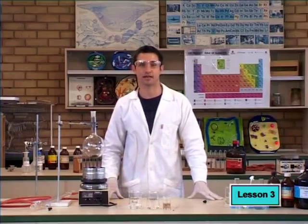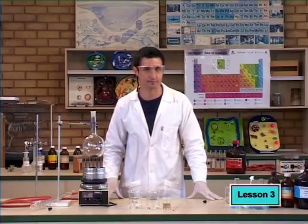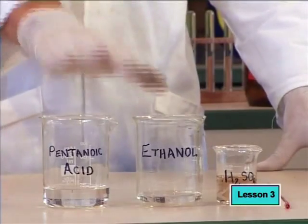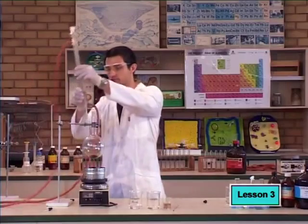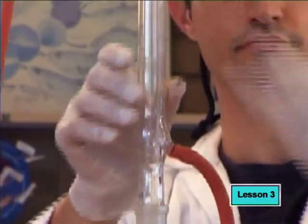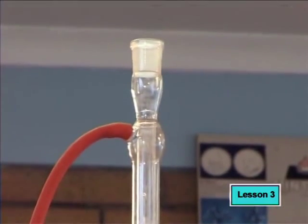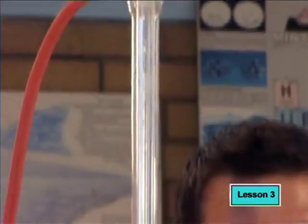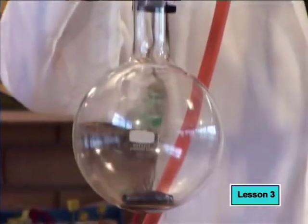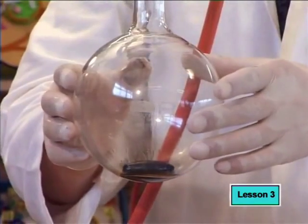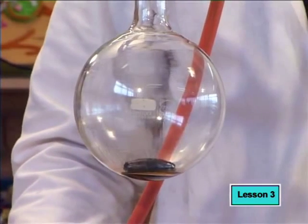Welcome back to my lab. We're going to do some organic chemistry together using carboxylic acid. We're going to use ethanol and pentanoic acid to make something new. This is called a reflux apparatus. We heat the mixture in the bottom of the round bottom flask until it boils. The gases rise into the condenser where they become liquid again by condensation and fall back into the mixture.